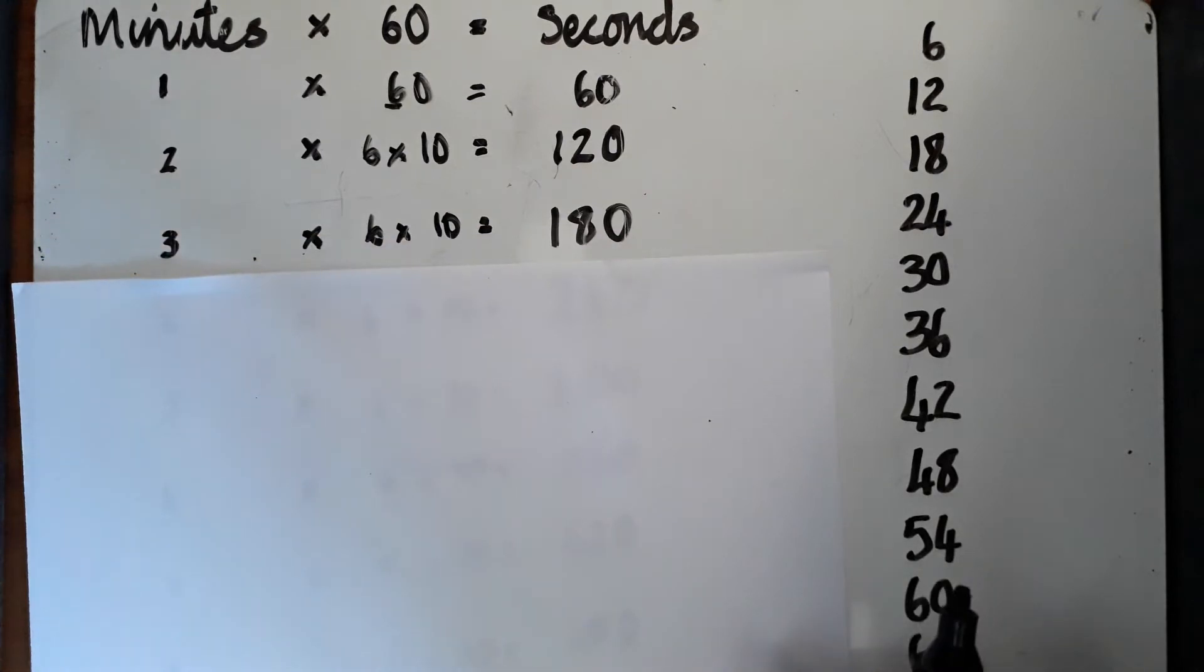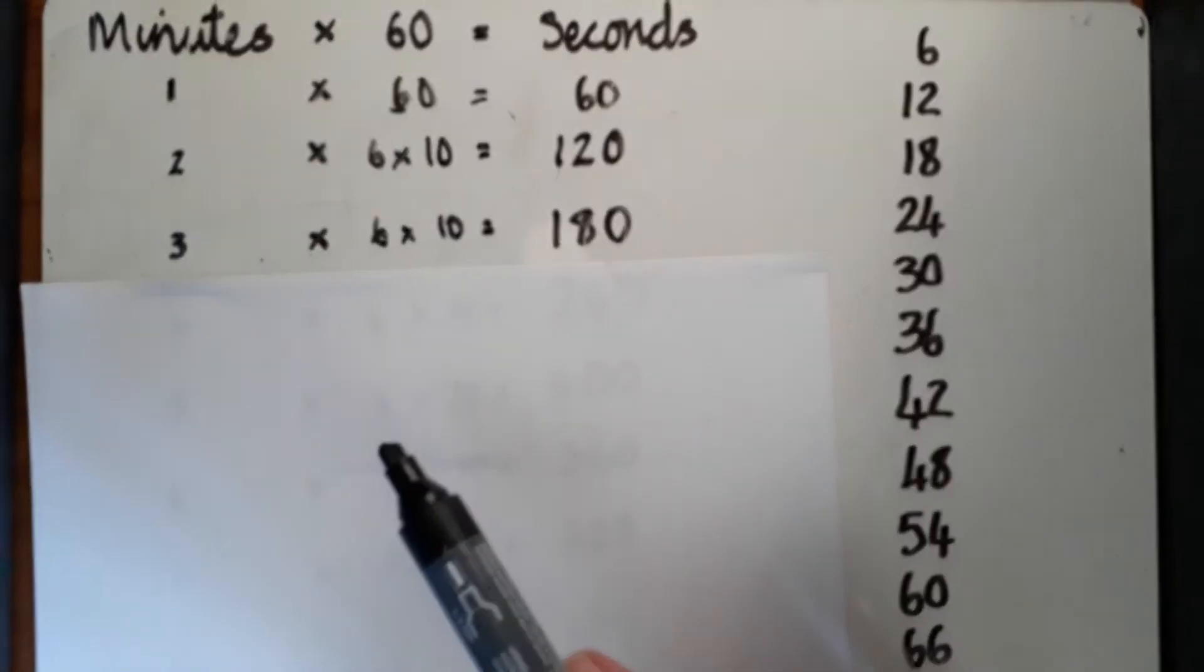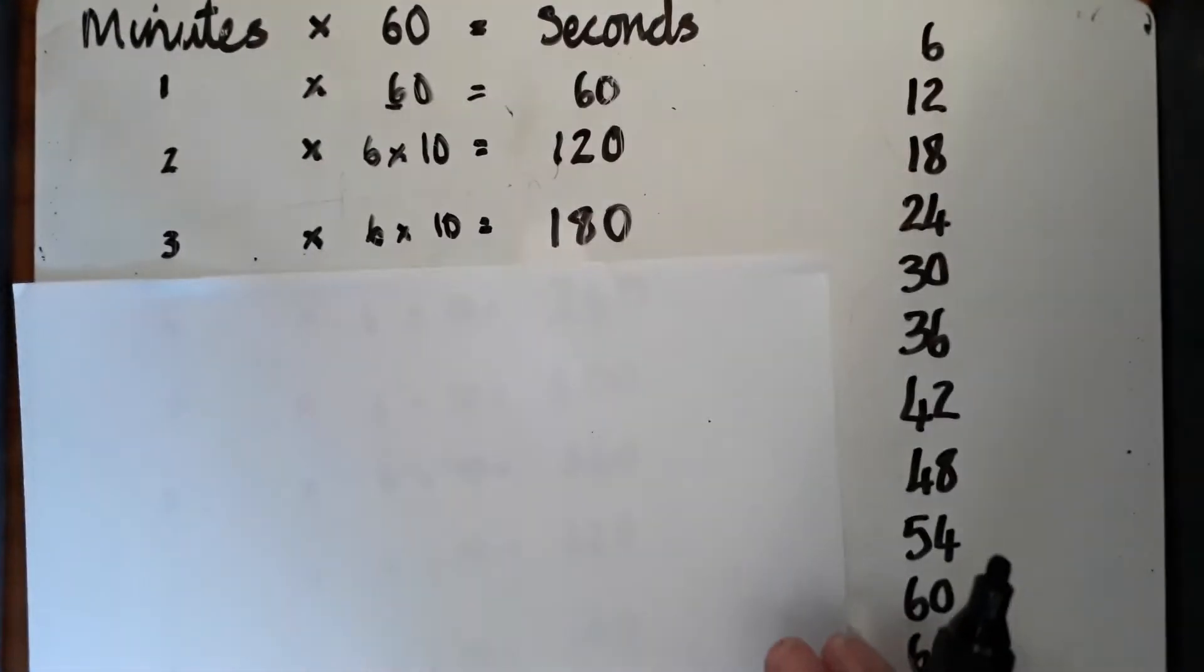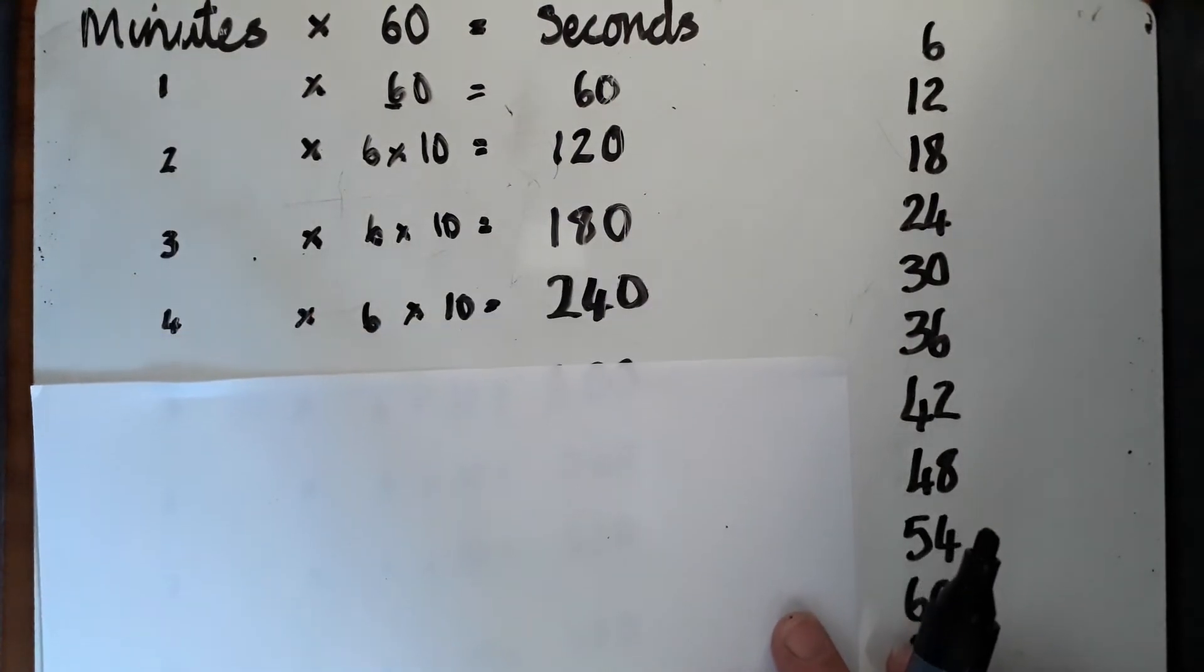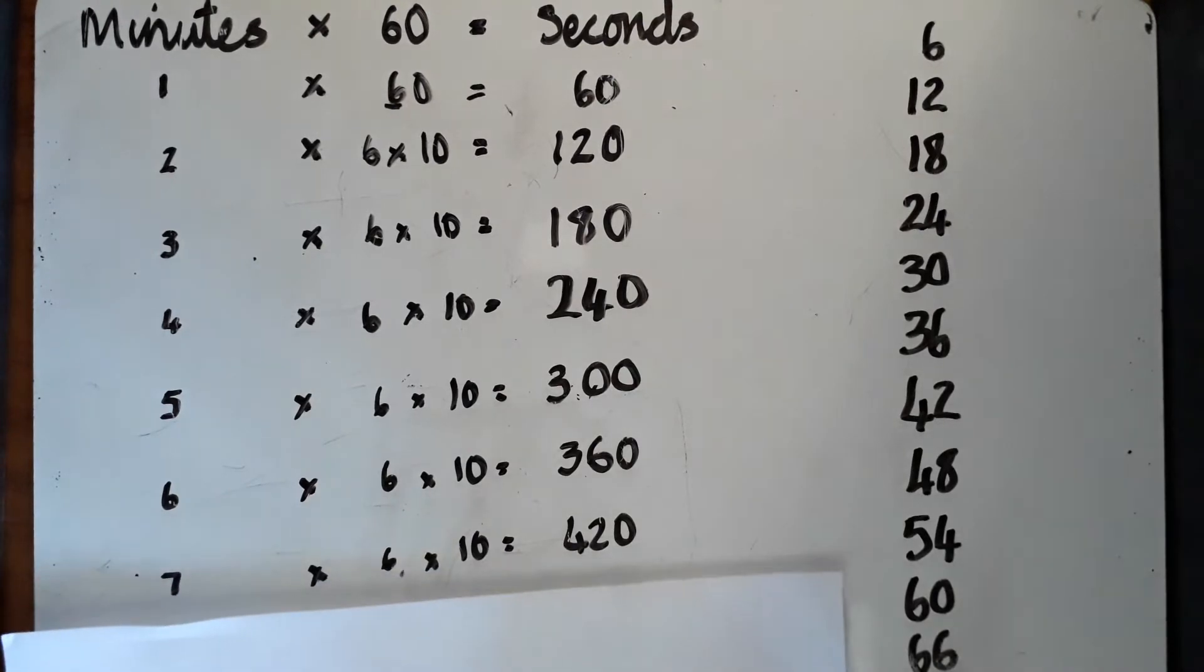Let's have a look. 3 times 6 times 10, well I know 3 times 6 is 18, times 10, move up one place value is 180. So you can go all the way down. 4 times 6 is 24, 5 times 6 is 30, times 10, 300. All the way, keep going.